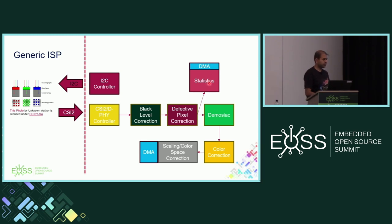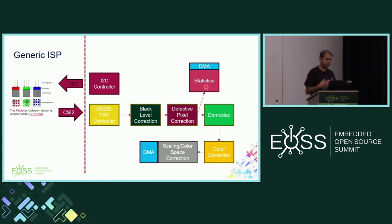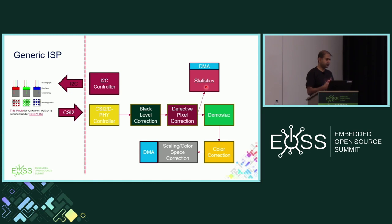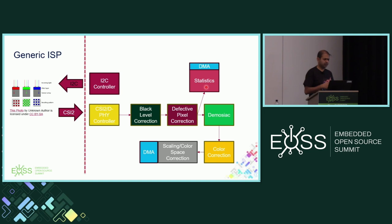Most ISPs also have statistics blocks tapped somewhere in the pipeline, typically before the demosaic, though sometimes after. These statistics get written to DDR. The reason for these statistics is a runtime component known as 3A algorithms — 3A stands for autofocus, auto white balance, and auto exposure. These algorithms look at hardware statistics produced by the ISP and make on-the-fly adjustments to always improve image quality — essential for preview, video usage, and even snapshot capture.